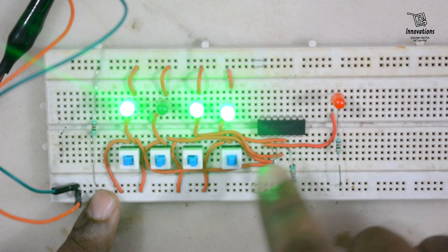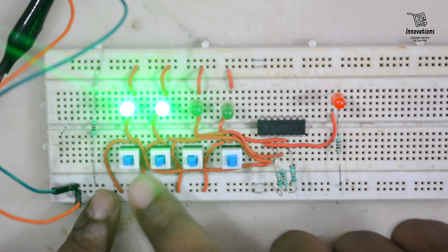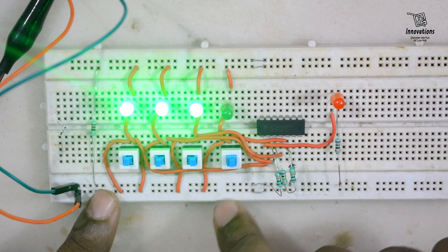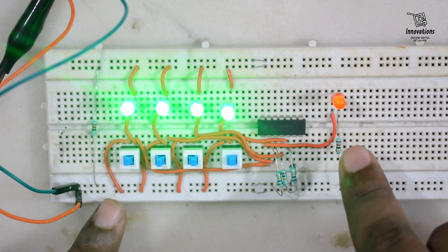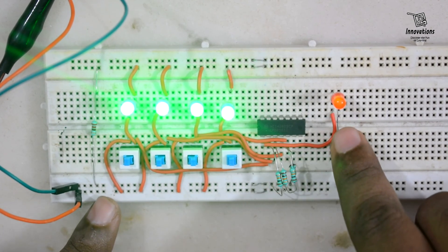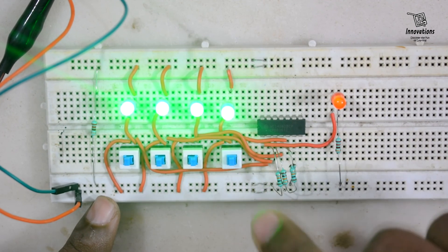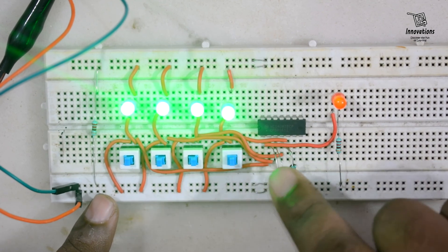1011 is 0, 1100 is 0, 1101 is 0, 1110 is 0 and 1111 is 1. So you can see the output is only high or 1 when all the inputs are 1. So it satisfies the truth table of an AND gate and it is only high when all the inputs are high.